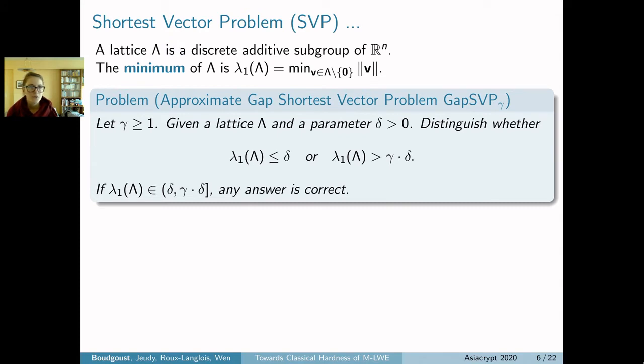First, we need the shortest vector problem. For any lattice, which is a discrete additive subgroup of Euclidean space, we can associate a minimum λ₁(Λ), the smallest norm of a non-zero vector in the lattice. We can define the approximate gap shortest vector problem for approximation factor γ, lattice Λ, and parameter δ > 0. The task is to distinguish whether the minimum is smaller than δ or larger than γ·δ. If the minimum lies between δ and γ·δ, any answer is correct. If the approximation factor becomes larger, the problem becomes easier.